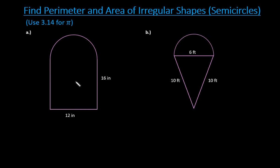For this video, I want to show you how to find the perimeter and the area of irregular shapes. These irregular shapes involve semi-circles, so I wanted to show you how to deal with that — when you have half a circle combined with another object.